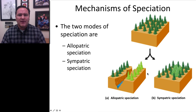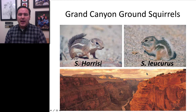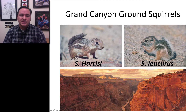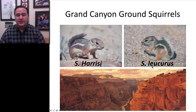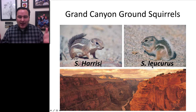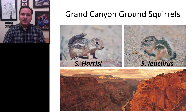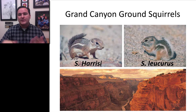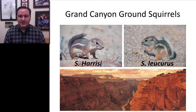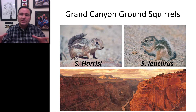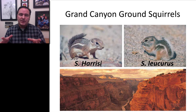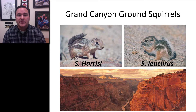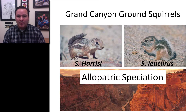Here are real-life examples of both. On the Grand Canyon, there are ground squirrels on the North Rim and South Rim that are now two different species: the Heresi and Lecurus species. Because the Grand Canyon lies between them, they cannot cross — you're crossing temperature boundaries, elevation boundaries, and the river itself. Ancestrally, these were one population before the Grand Canyon existed, but the canyon created geographic isolation resulting in two separate species. This is allopatric speciation.